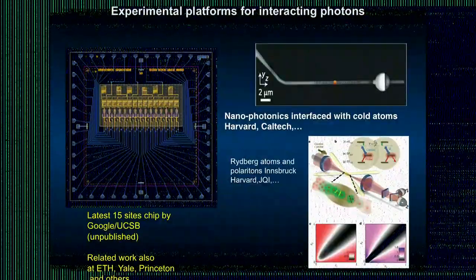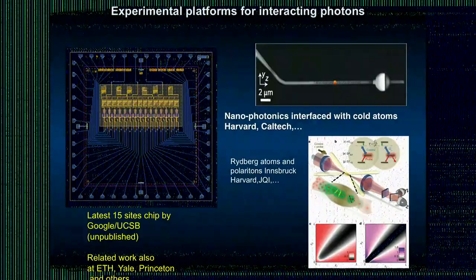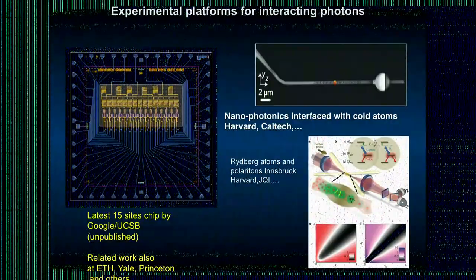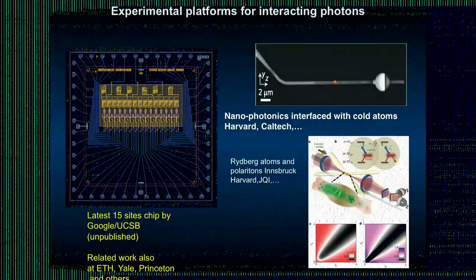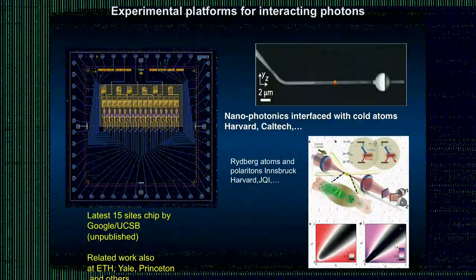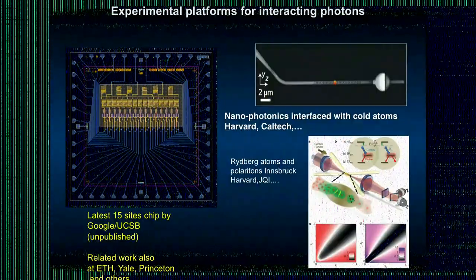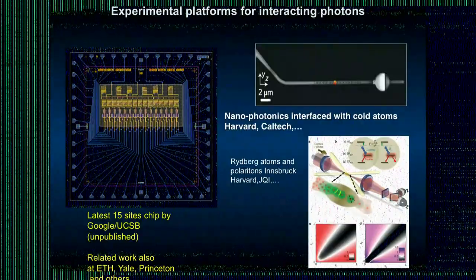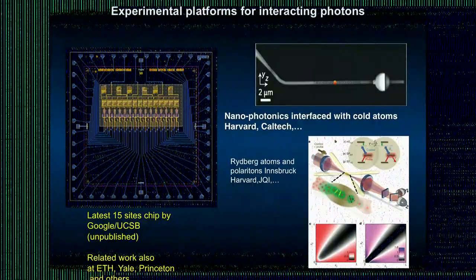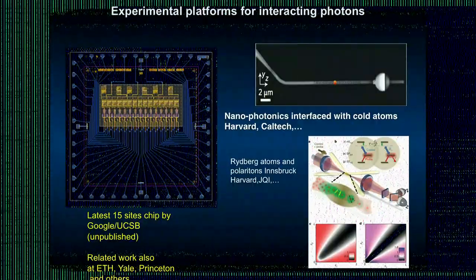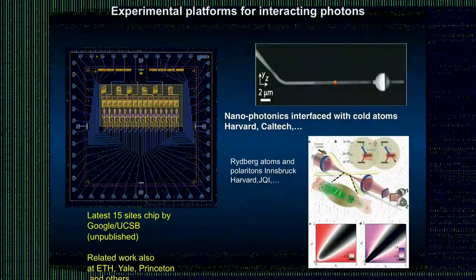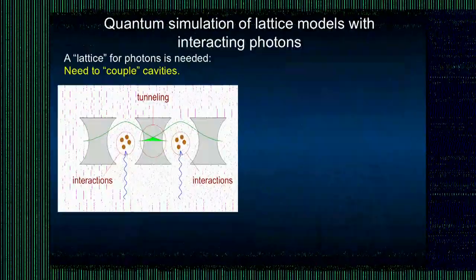If you scale this up, experimentally, how these systems look like, in the microwave regime, this is a 15-site chip, the more recent one by Google. Most of my talk will be on the 9 chip. You have 15 sites here. You can count. And each of them, you can model as a kind of a nonlinear or a cavity Jaynes-Cummings system. Now, you can also do the same things in the optical regime, interfacing called that of nanophotonics, and also in the Rydberg, using Rydberg atoms.